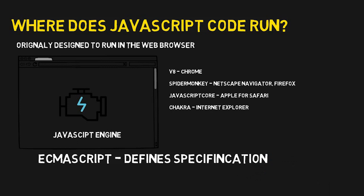Nowadays JavaScript is also used to run on servers — we can build both backend and frontend with JavaScript. JavaScript on the backend can be run using Node.js. Node.js is essentially a C++ program that provides a wrapper to execute JavaScript code, making JavaScript available to be executed on the server side.